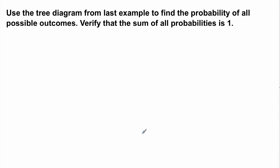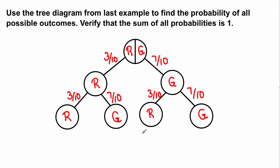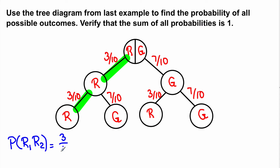Now let's use the tree diagram from the last example to find the probability of all possible outcomes, and then verify that the sum of all probabilities is equal to 1. If I want to find the probability that the first ball is red and the second ball is red, we need to follow that path. The answer is the product of the probabilities written by the branches, so it will be 3 over 10 times 3 over 10, which equals 9 over 100.